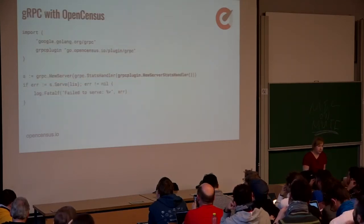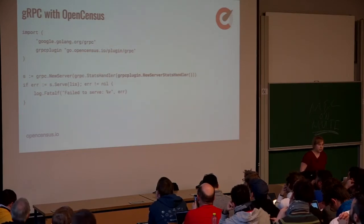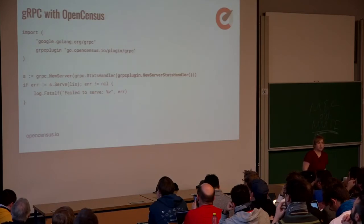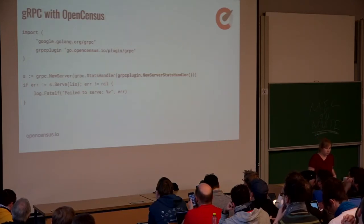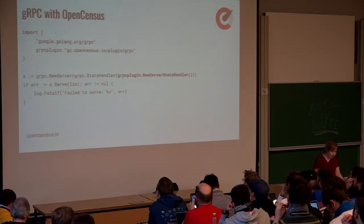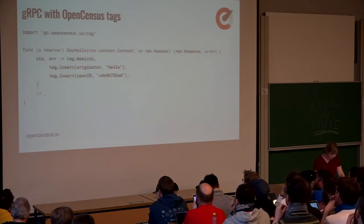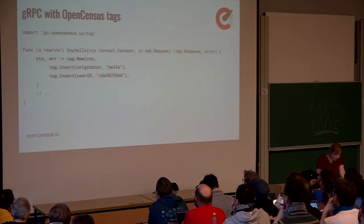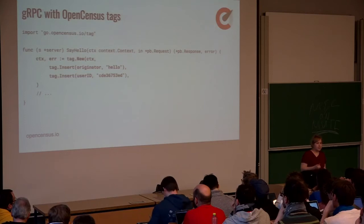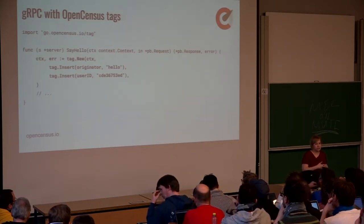So speaking of framework integrations, I just want to show briefly what it looks like for GRPC. At Google, we're also responsible for all the GRPC's observability, and these integrations are what we are planning to use internally at Google. For now, you need to import this plugin and pass it as a stats handler to the GRPC clients and servers. In this case, we're looking at the GRPC server. You can see the new server stats handler. In the handler, you can extend the tags, incoming tags from the current context. In this case, I'm inserting hello as originator server and inserting the user ID as well. Then, it will be possible for the backends to break down the collected data with originator service and user ID.